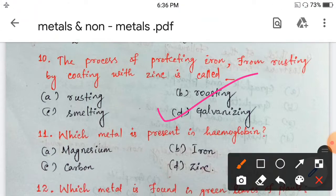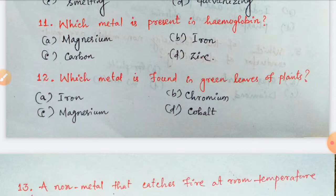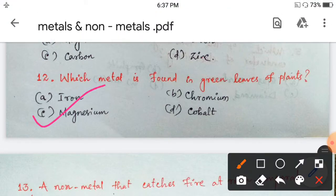Which metal is present in hemoglobin? Magnesium, iron, carbon, zinc. Your iron is present in hemoglobin. Next, which metal is found in green leaves of plants? Iron, chromium, magnesium, cobalt. That is your magnesium, which is present in chlorophyll. Your option C is correct.